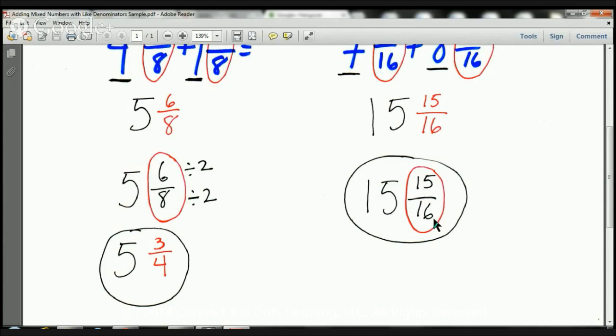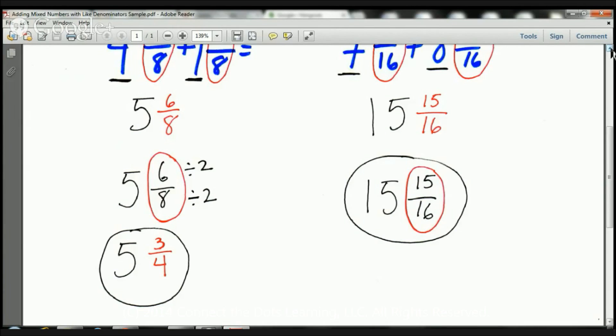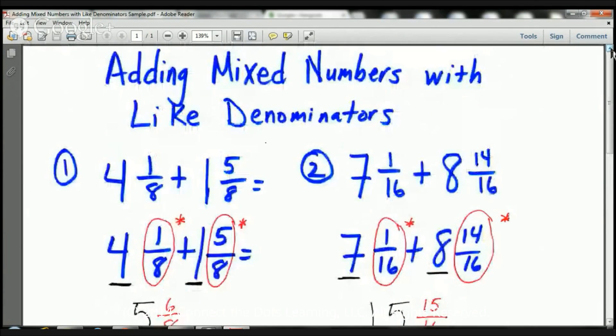This is going to be 15 and 15 sixteenths, and that's pretty much it, boys and girls. Now your parents have a PDF file of all the practice problems. You're going to have 20 pages worth of practice problems, so you're going to be an expert at adding mixed numbers with like denominators. This is going to be a piece of cake for you.